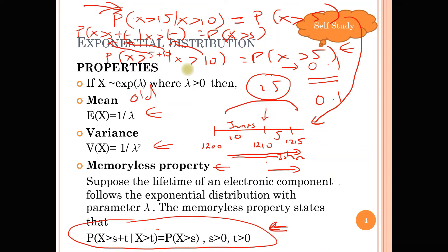This property applies only for the exponential distribution, and of course the exponential distribution works with the waiting time between Poisson occurrences. So when you are dealing with waiting time between two Poisson occurrences, you know that this memoryless property applies.